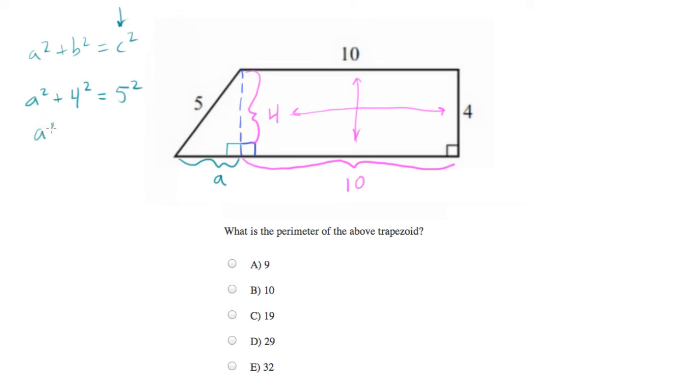We can calculate the value for a: a² = 25 - 16, which equals 9. So a is equal to plus or minus 3, and since we know we're dealing with a physical quantity, we're going to go with the positive value. So a equals 3, and now we can solve the perimeter of our trapezoid.